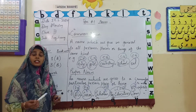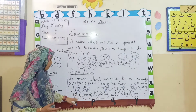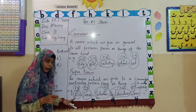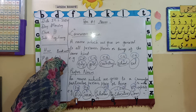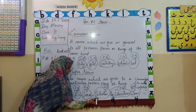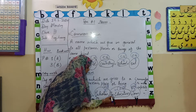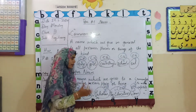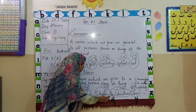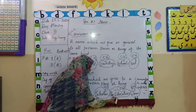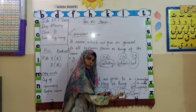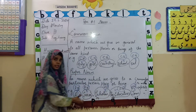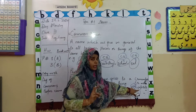Next thing — it is very necessary to know how we can tell if something is proper or common. One thing I would like to tell you: the first letter of your proper noun is capital. You can see here — Ali: A is capital. Sara: S is capital. Pakistan: P is capital. The Educators: T and E are both capital. And Tom: T is capital. The first letter is capital — it shows that these are proper nouns.